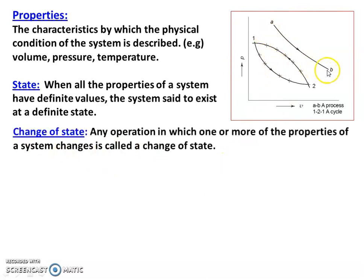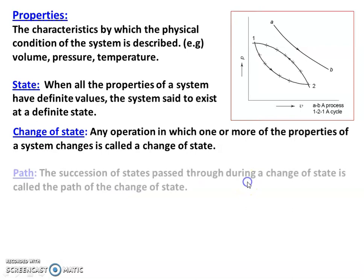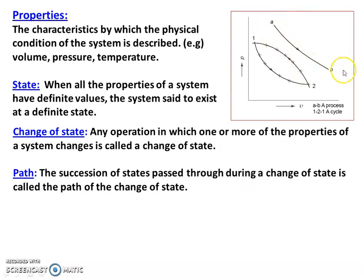Change of state: any operation in which one or more properties of the system changes is called a change of state. There is a change in pressure and change in volume — that is called a change of state. Path: A is the initial state, B is the final state. There is a change of state from A to B. The line A to B is the path. The succession of states passed through during a change of state is called the path of the change of state.